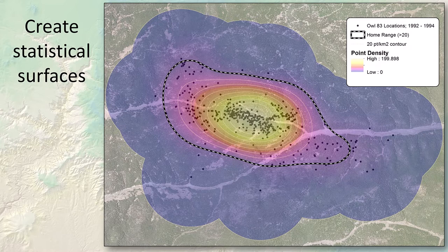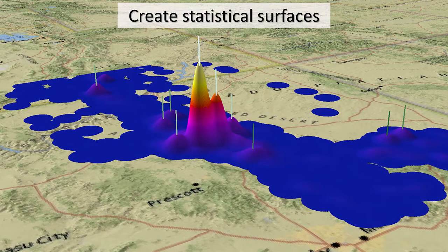Here's another example of a statistical surface used in wildlife analysis. This is what in GIS we call a kernel density, but in the regular world we usually call a heat map. This type of analysis lets us identify areas where an animal seems to spend most of its time.